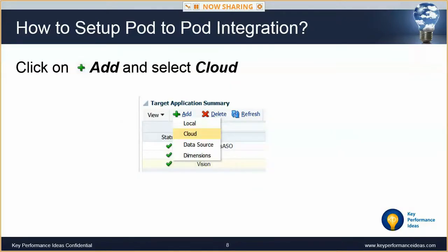From the menu on the left, navigate to the Setup tab and select Target Application under the Register section. In the top section of the Target Application page, click Add to create a new target application. If you're familiar with the on-premise FDMEE, you'll notice this looks the same with the exception of the cloud target type — which is the one you want to select.